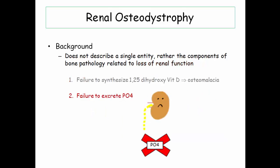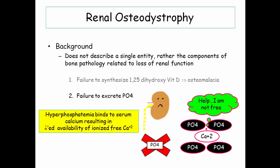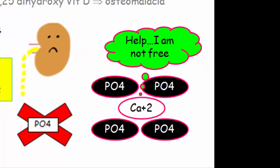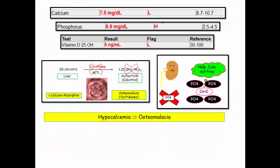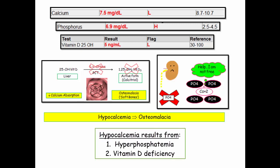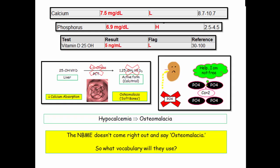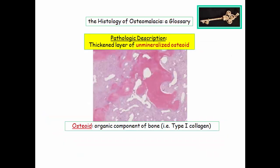The patient with chronic renal failure loses the ability to excrete phosphate. Hyperphosphatemia binds to serum calcium, resulting in decreased availability of ionized free calcium. This is depicted in a drawing demonstrating low free ionized calcium. Be familiar with the two causes of hypocalcemia in patients with chronic kidney disease — the net result is osteomalacia, which represents one of the two manifestations of renal osteodystrophy.